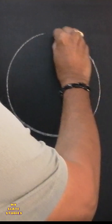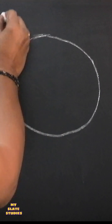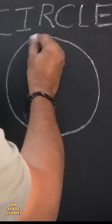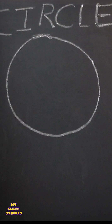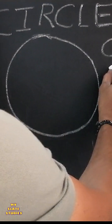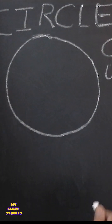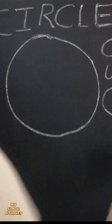Let's dive into the world of basic shapes. First up, we have the circle. It's perfectly round with no corners or angles. Think coins, wheels, and clocks.